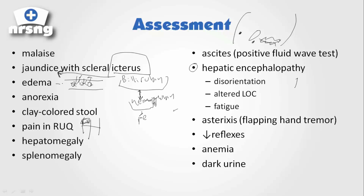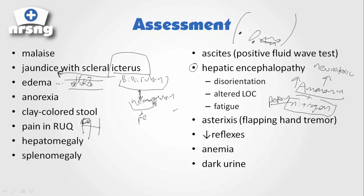Hepatic encephalopathy is due to increased ammonia levels. Ammonia is a byproduct of nitrogen breakdown — basically protein metabolism — and ammonia is a byproduct of that. Normally the liver removes ammonia from the system without it ever getting into the bloodstream, but due to blocked blood flow within the liver, ammonia gets into the system. Ammonia is very neurotoxic. As it gets into the system, it can enter cerebral blood flow and start to alter normal neurological status, leading to disorientation, altered levels of consciousness, and fatigue — leading patients almost to a comatose state.